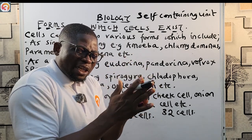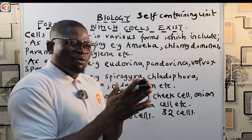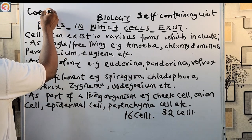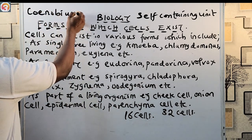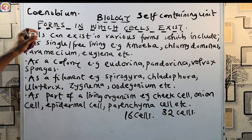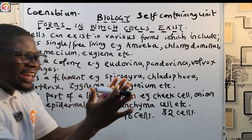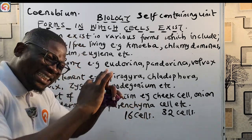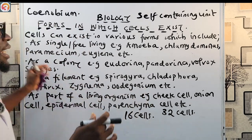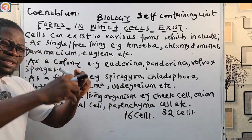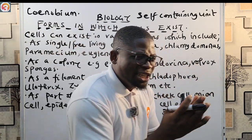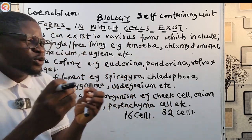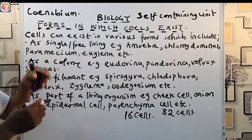When a colonial organism contains a number of cells that are arranged in a specified definite form, and those cells are integrated or fused together, we call that colony a coenobium — spelled C-O-E-N-O-B-I-U-M. Please take note of that term.